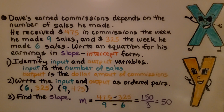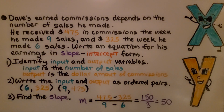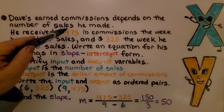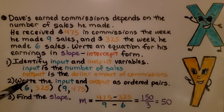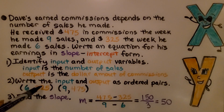Dave's earned commissions depend on the number of sales he made. He received $475 in commissions the week he made nine sales and $325 the week he made six sales. Write an equation for his earnings in slope-intercept form. The input is the number of sales and the output is the dollar amount of commissions. Our ordered pairs are (6, 325) and (9, 475). Using the slope formula: 475 minus 325 over 9 minus 6 gives us 150 over 3, which simplifies to 50.